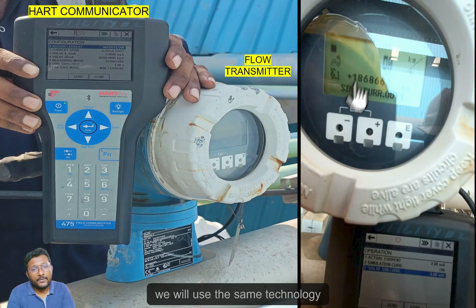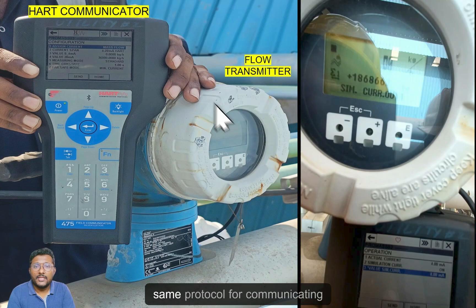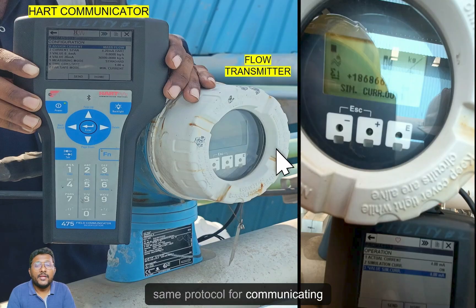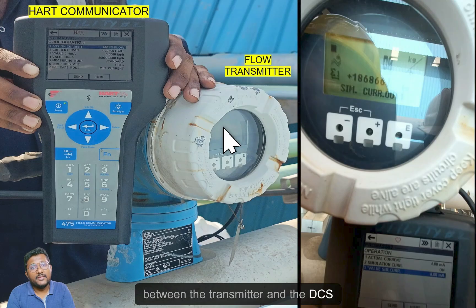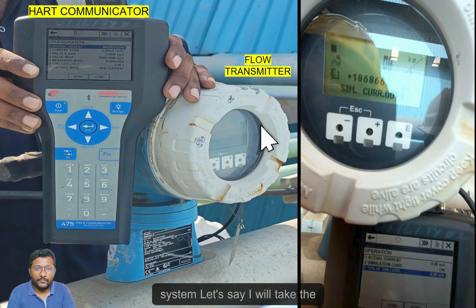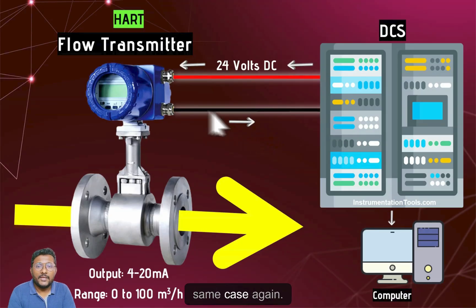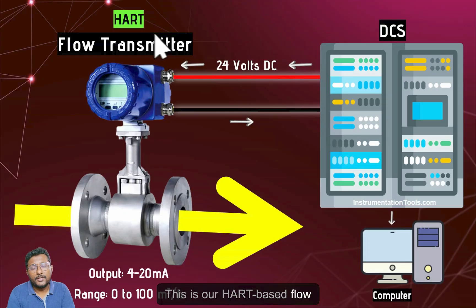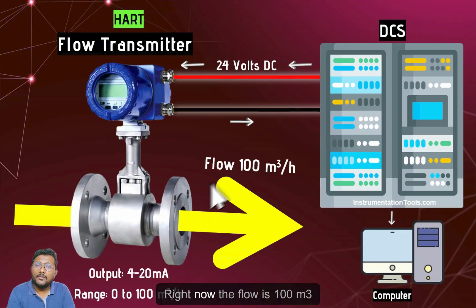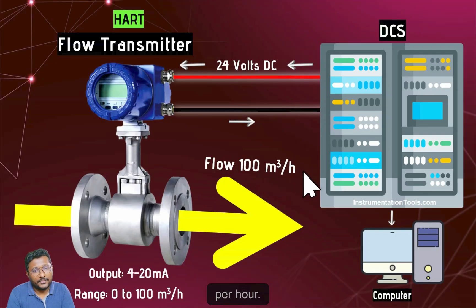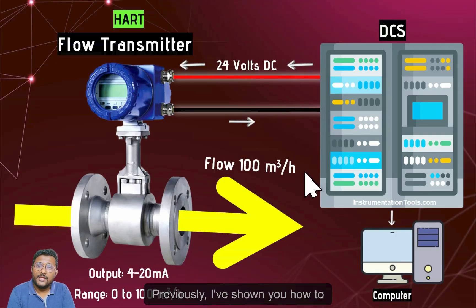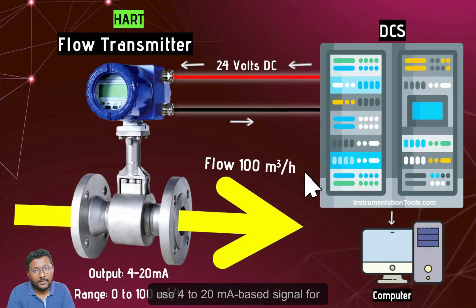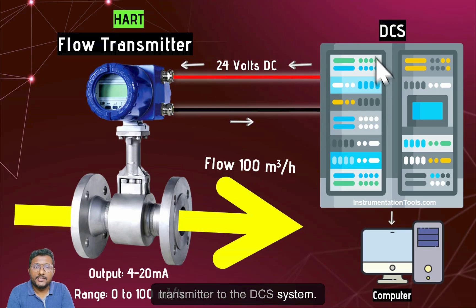We will use the same protocol for communicating between the transmitter and the DCS system. For example, this is our HART based flow transmitter and right now the flow is 100 cubic meters per hour. Previously I showed how to use the 4 to 20 milliamp signal for transmitting this measured flow rate from the transmitter to the DCS system.